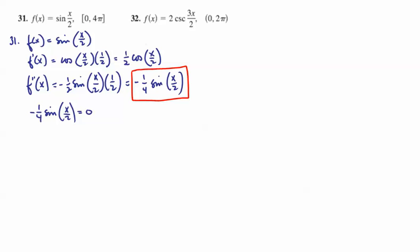So we need x over 2 to be 0, or x over 2 to be pi, or x over 2 to be 2 pi, or x over 2 to be 3 pi. We'll try also x over 2 to be 4 pi. Alright, so if x over 2 is 0, then x equals 0. That'll be our first potential point of inflection. The second, x over 2 is pi when x is 2 pi.